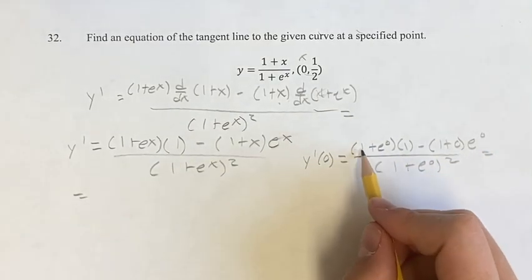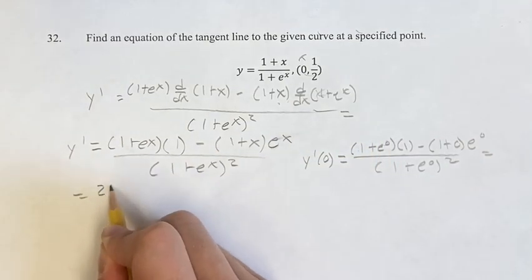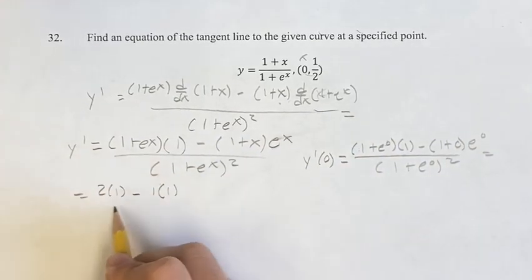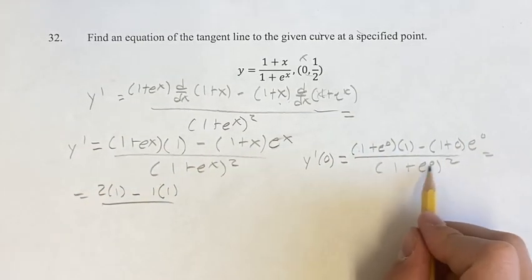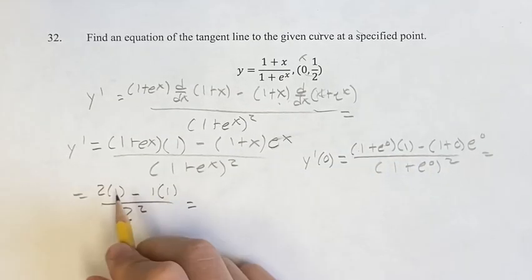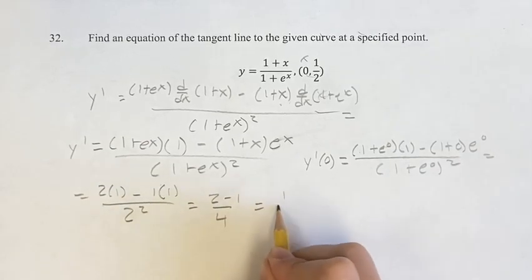Which is equal to 1 plus e^0. This is 1, so 1 plus 1 is 2 times 1 minus 1 plus 0 is 1 times e^1 is 1 over 1 plus e^0 is 1 plus 1, so 2 squared. So we get 2 minus 1 over 2 squared is 4, equals 1 over 4.